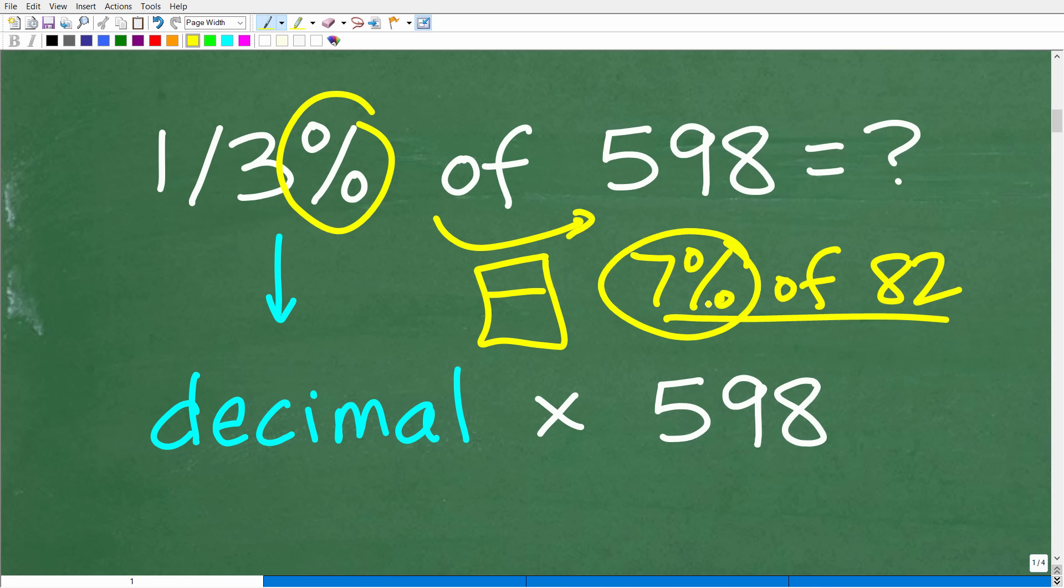Well, what we would do is we would change this percent to a decimal, and then we would multiply by 82. So 7% as a decimal would be 0.07. And to go from a percent to a decimal, how do we do that? Well, we divide by 100 or remove the decimal point over two places to the left. So hopefully you understand how to find the percent of a number. And that is the process.